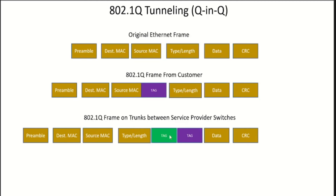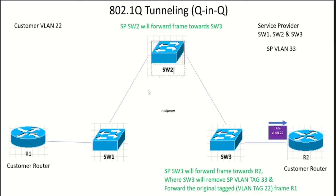That's how the tagged frame looks before it's forwarded towards the service provider Switch 1, and after it leaves Switch 3 towards Router 2.